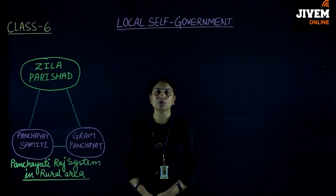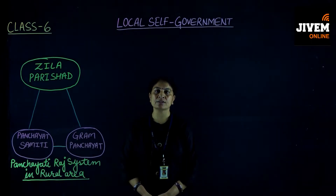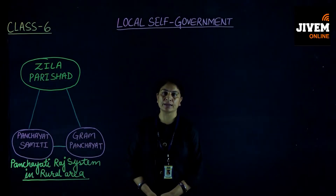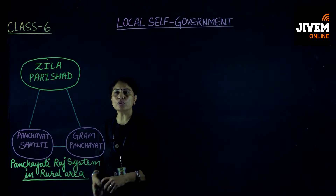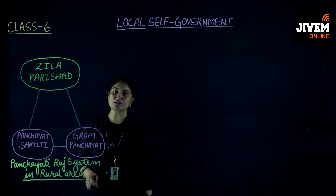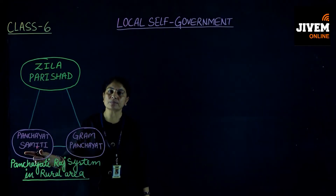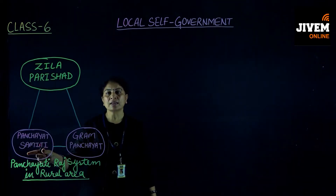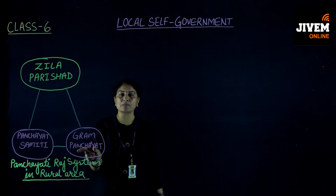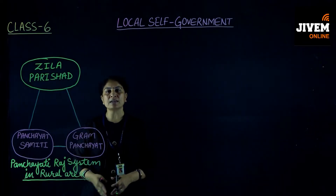Hello everyone, welcome to Concept Booster Class. Dear students, as we discussed in the previous video, Panchayati Raj is a system of local self-government in rural areas. The Panchayati Raj system, also known as the three-tier system: the first tier is the Zila Parishad at district level, the middle tier is the Panchayat Samiti at the tahsil level, and the smallest unit is the Gram Panchayat at the village level.